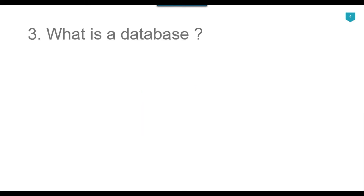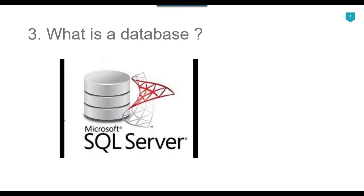Our third question is: what is a database? A database is an organized collection of data so that it can be easily accessed and managed. Databases can store data in the form of tables. The main purpose of a database is to operate on a large amount of information by storing, retrieving, and managing data. Modern databases are managed by database management systems. SQL language can be used to operate on the data stored in a database. A database can contain related tables, views, stored procedures, functions, and more.